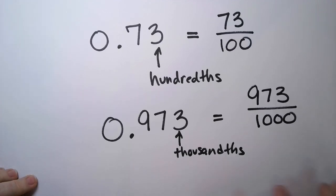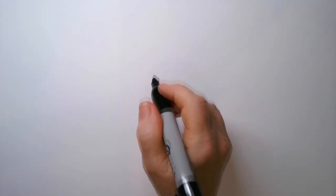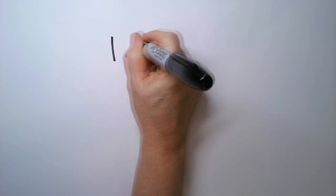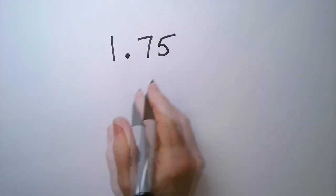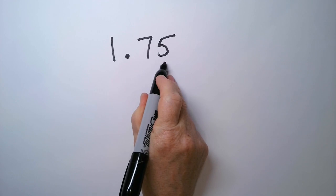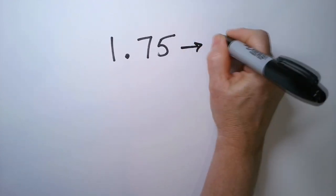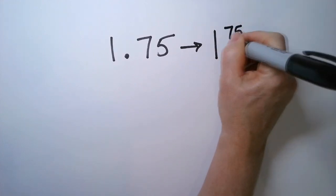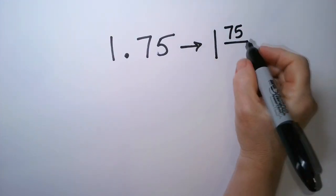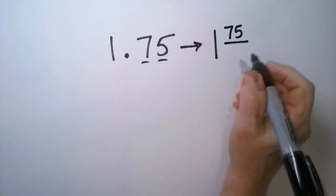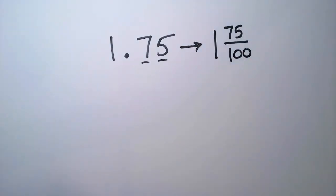What about a number that looks like this? This is 1 and 75. This is hundredths. So we would write this as 1 and 75 hundredths is this place. Remember? Tenths, hundredths. And that's it.